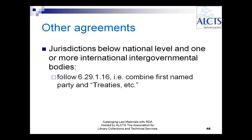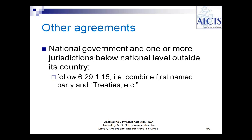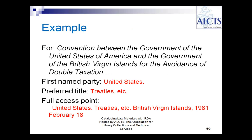You can also have agreements between jurisdictions below the national level and one or more international intergovernmental bodies — in that case you do use 'treaties, etc.' Or between a national government and one or more jurisdictions below the national level outside the country — again you use 'treaties, etc.' Here's an example of an agreement between the United States and the British Virgin Islands: you start with the first-named party, use the preferred title 'treaties, etc.,' and give the second party and the dates of signing.